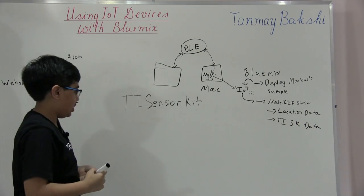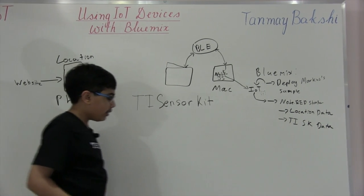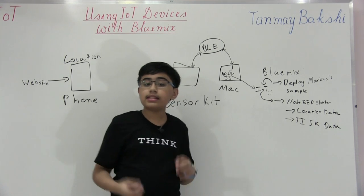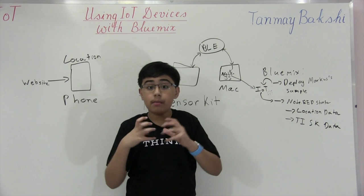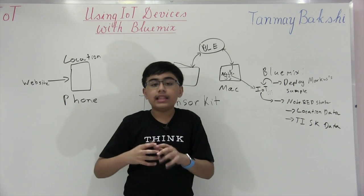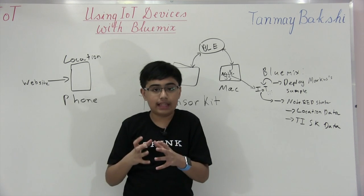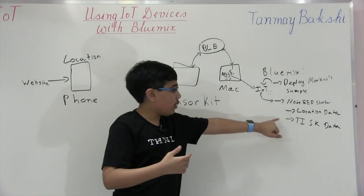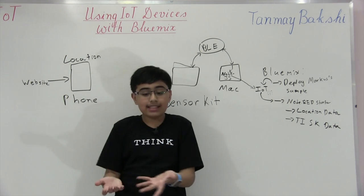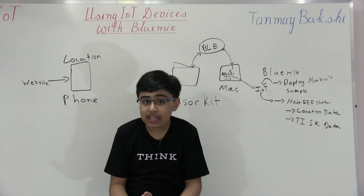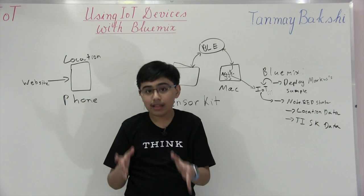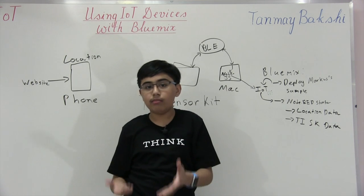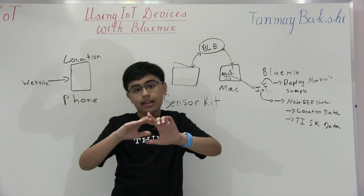An example use of the sensor kit: since it has acceleration and motion location data, let's say you're shaking it really fast — it can print out to Node-RED 'please stop shaking me.' If you bring it down really low, it'll use that location data and print out 'please raise me up.' And if the magnetometer data is really high, you could print out 'get the magnet away from me.' That's just one idea of what's possible.